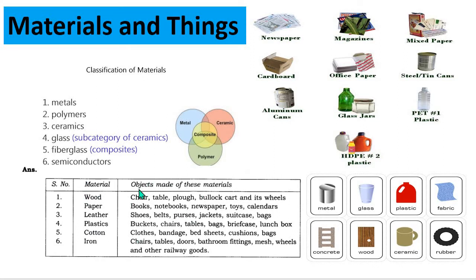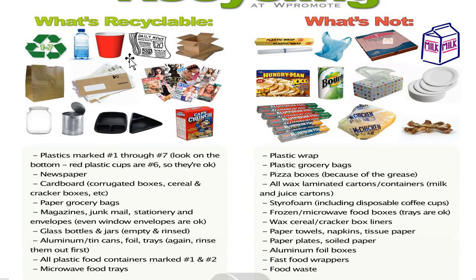From wood, chair, table, plug, and gas fittings can be made. From paper or newspaper, notebooks, toys, and many things can be prepared. From leather, shoes, belts, purses, jackets, suitcases, and bags can be made. From plastics, buckets, chairs, tables, bags, briefcases, and lunch boxes can be made. From cotton, clothes, bed sheets, and cushion bags can be made. From iron, chairs, tables, bathroom fittings, mesh, and wheels can be made.